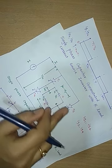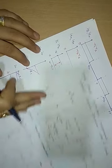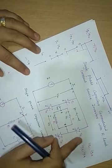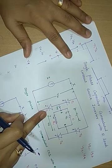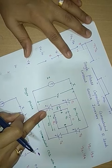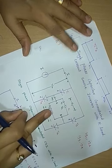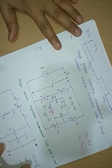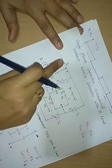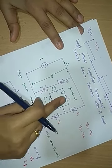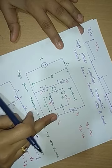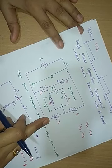When T1 and T2 are gated at T equals 0, the capacitor voltage Vc reverse biases the conducting thyristors T3 and T4, so T3 and T4 get commutated instantly. When thyristors T1 and T2 get turned on, the current flows through thyristor T1, then through the parallel combination of R and C, and then through T2.